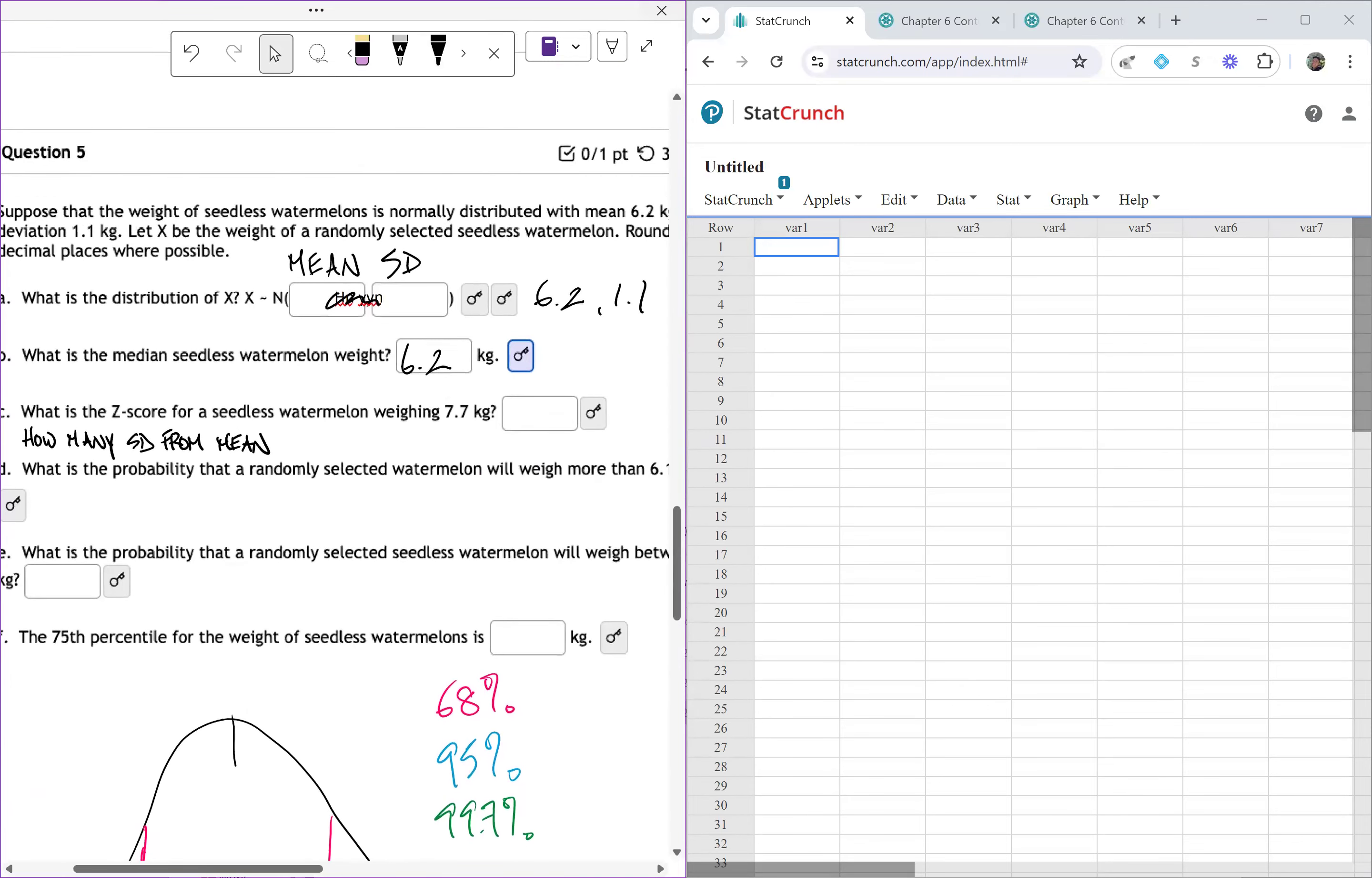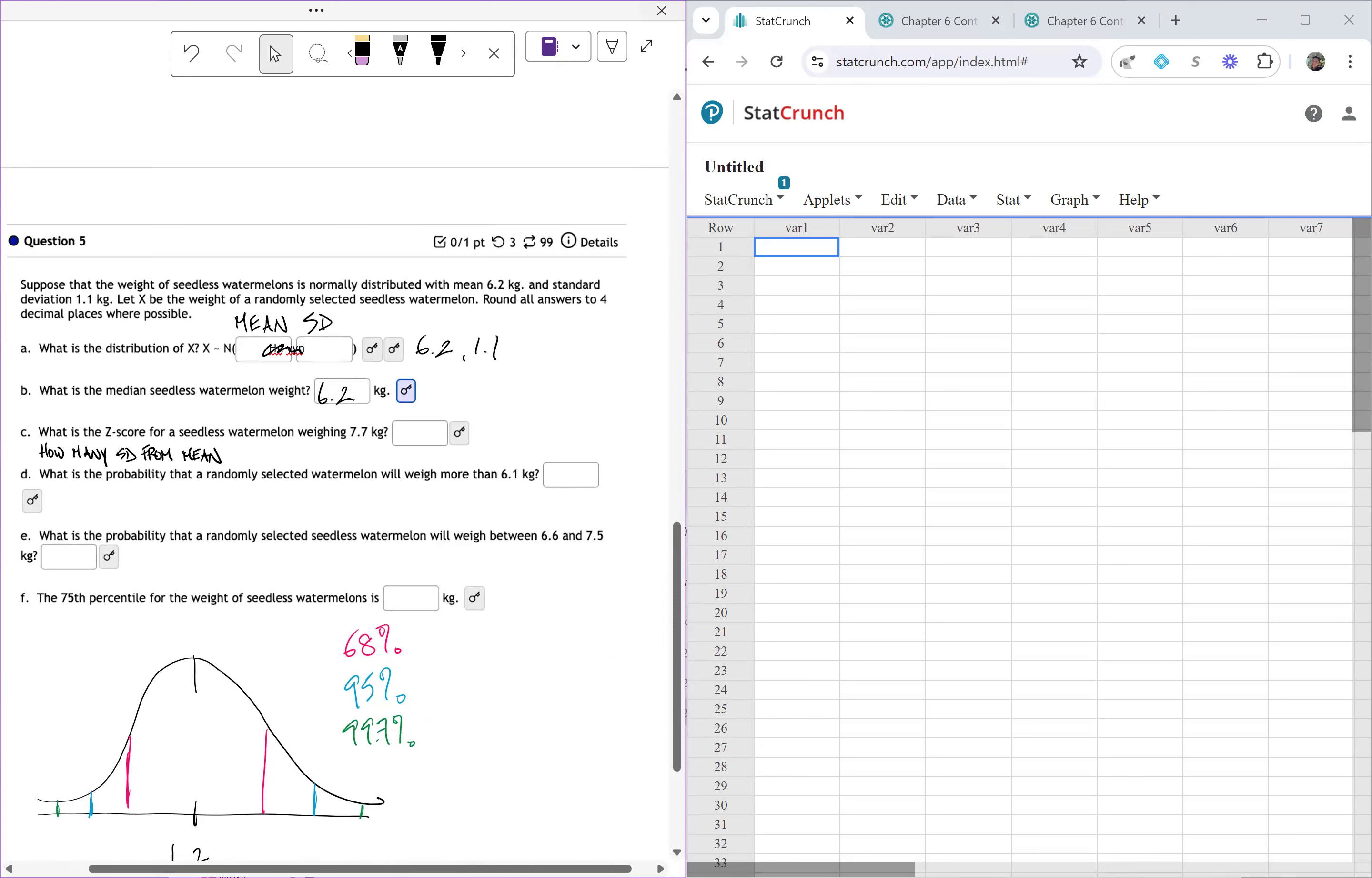Luckily for us, we have a formula for this. Our Z score is our value minus mu, which is our mean, over sigma, which is our standard deviation. And when I plug in all of my values, 7.7 minus 6.2 over 1.1, and when I type that into the calculator, the value I get is 1.3636. The number after six is three, and so that means that I'm just going to keep the six. I don't round it up to seven, because we want to make sure that we're rounding properly.